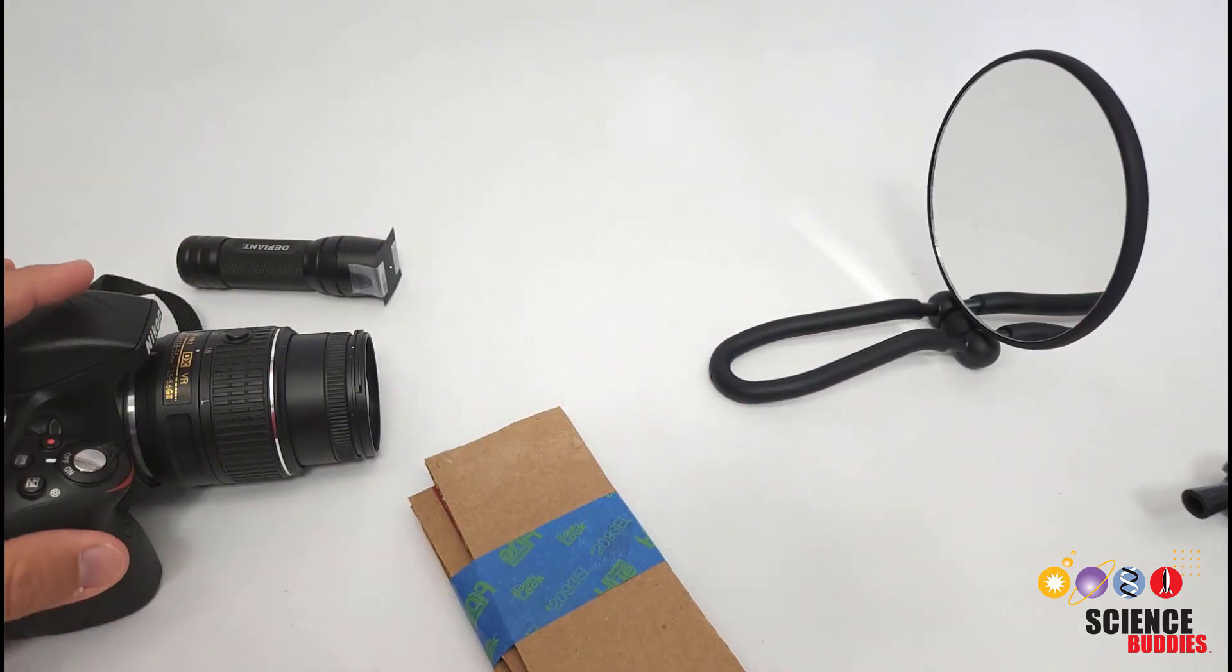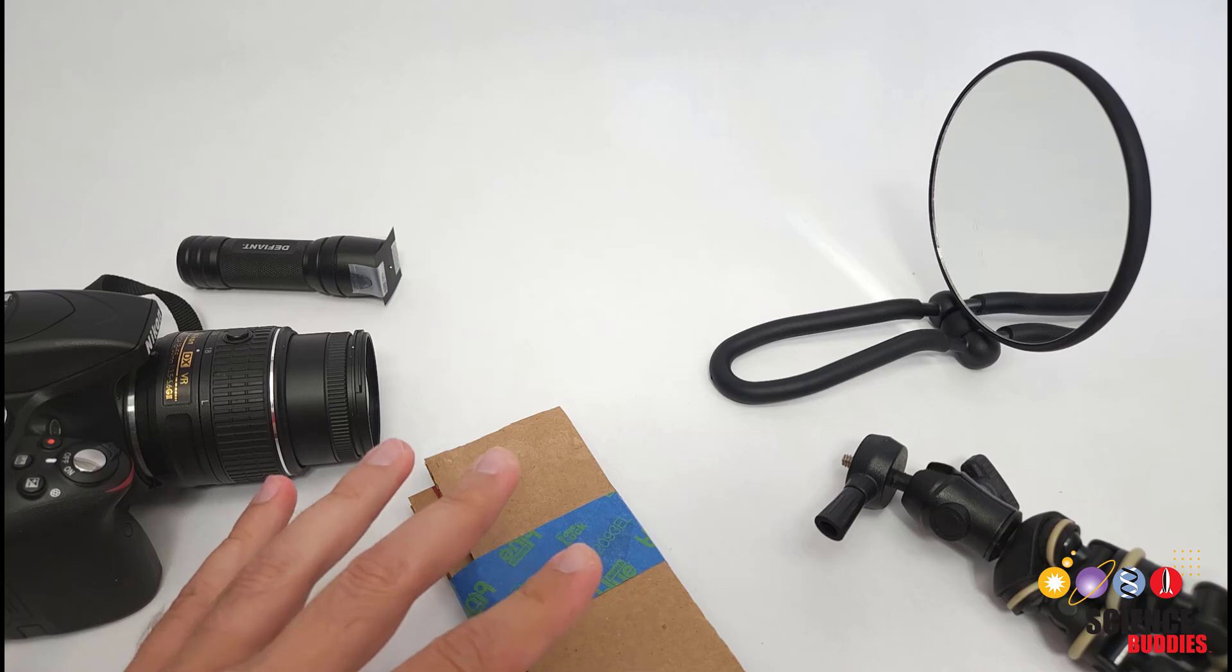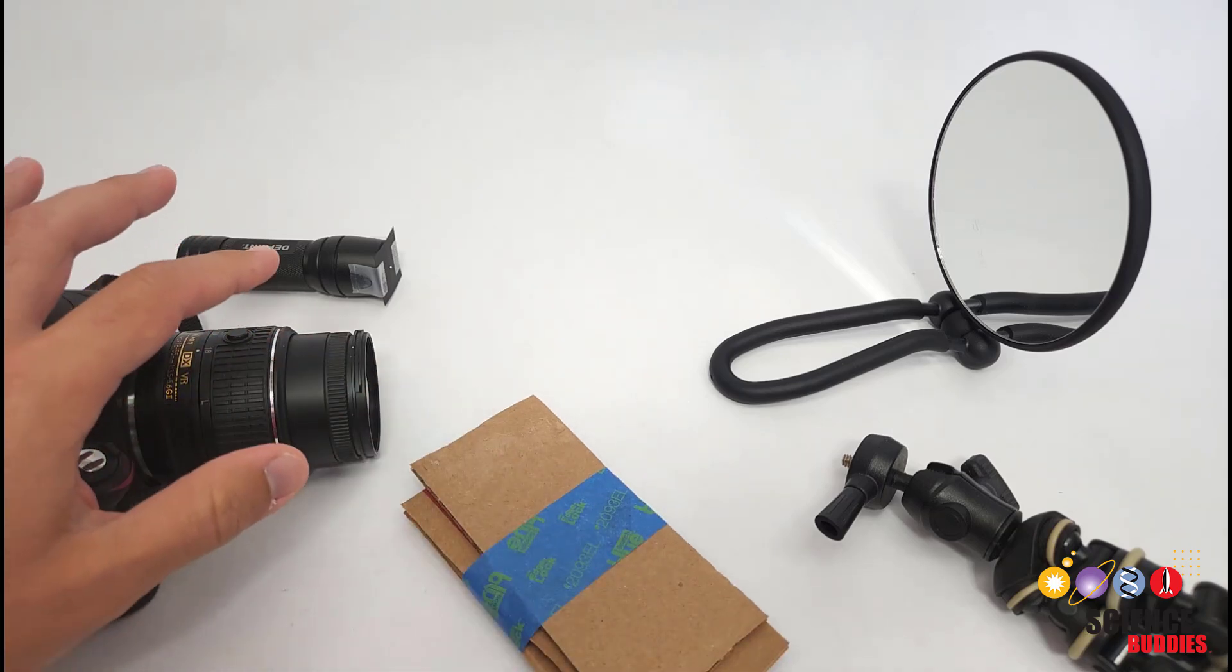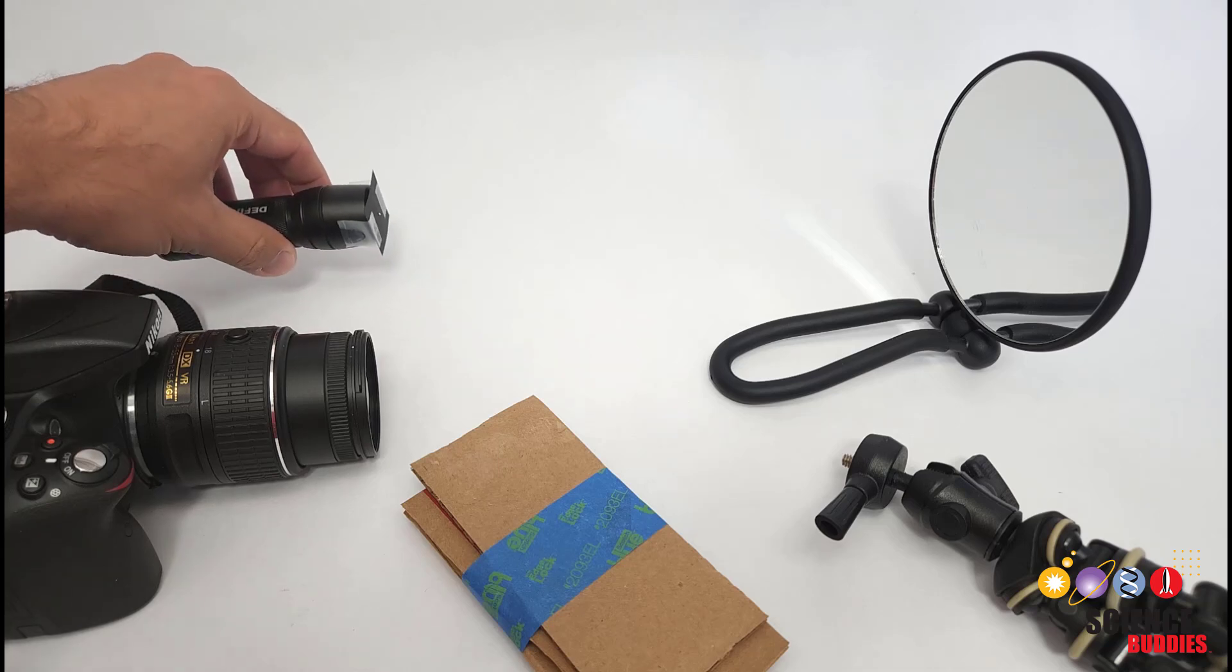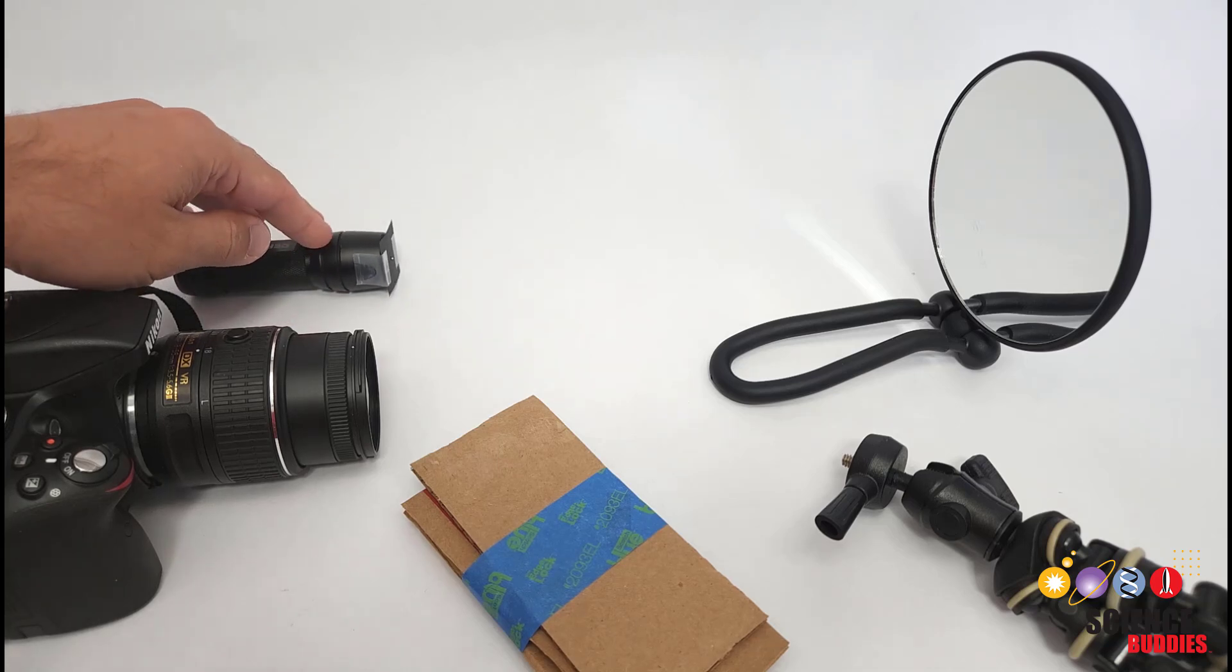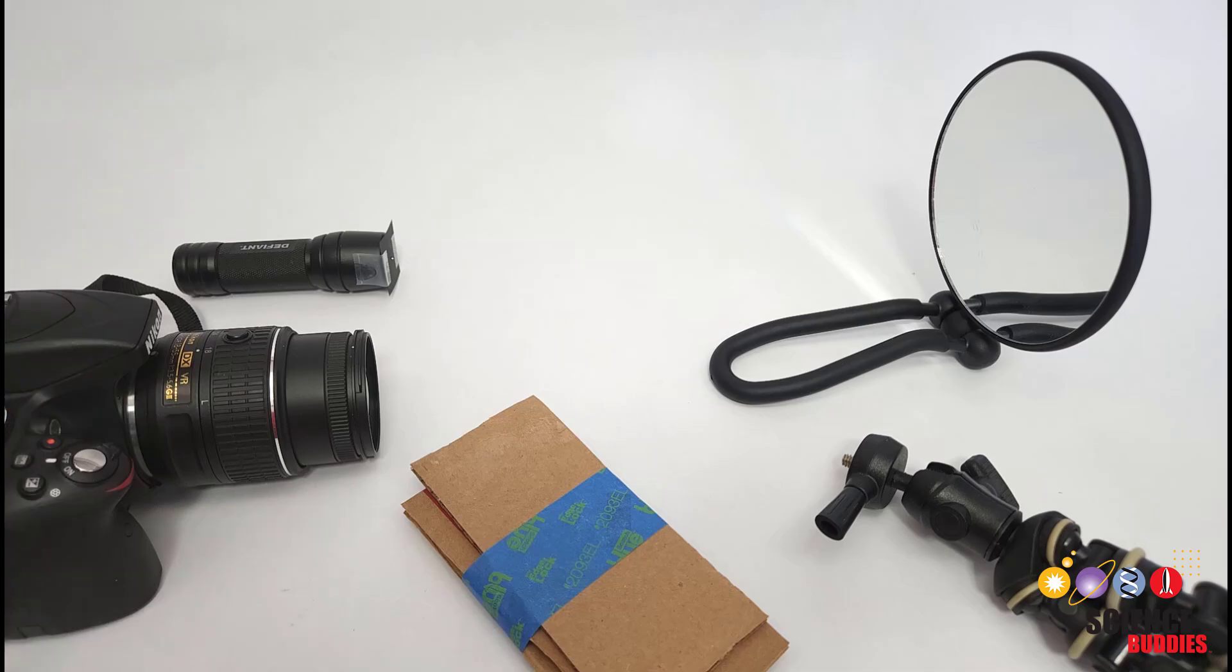Before you get started and try to align everything, just think about what you have available and how you can carefully position things, because as I will demonstrate next, we're going to need to carefully position the flashlight such that the light is reflected into the camera.